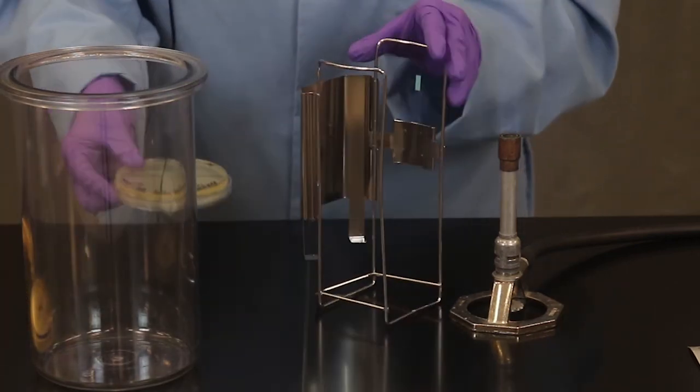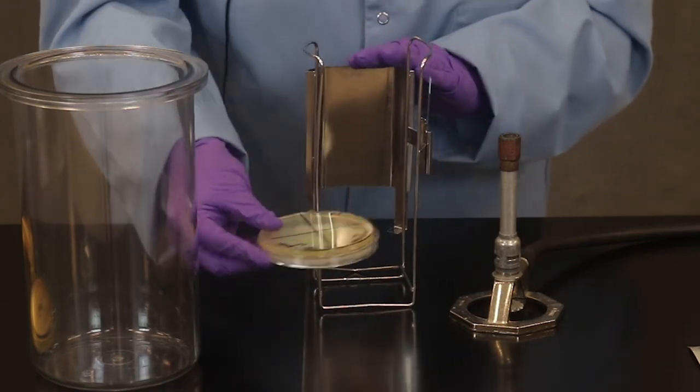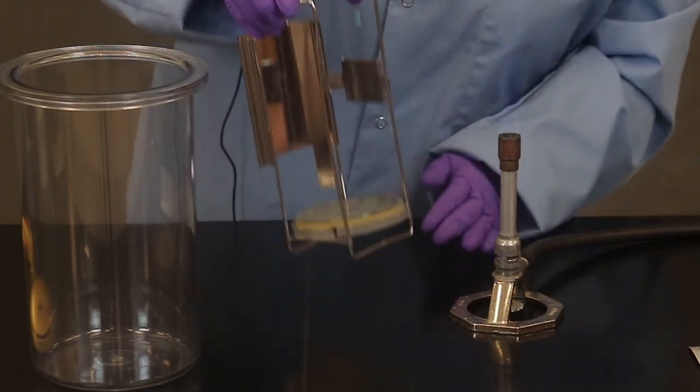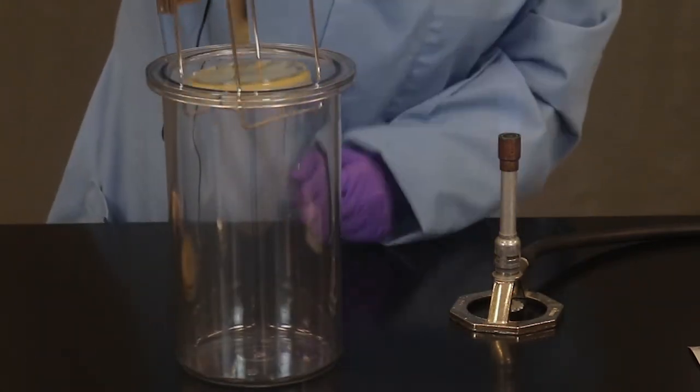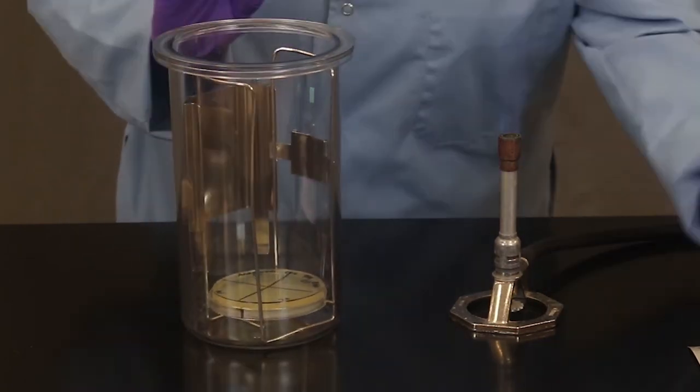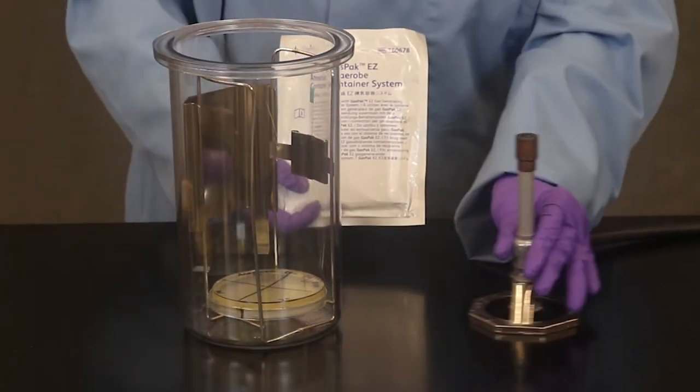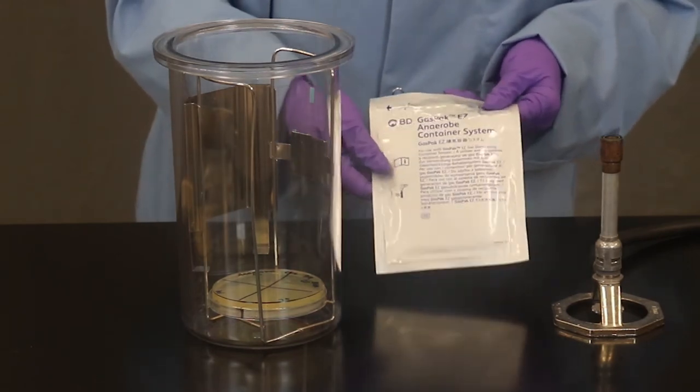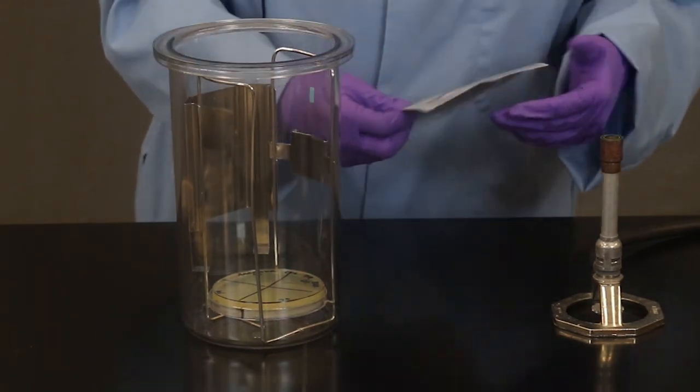So you're going to take your anaerobic plate. Our lid is on the bottom here. You're going to feed it into the metal rack. Place it into the jar. And before we can close this up we're going to add our gas pack here. And this is going to help chemically chew up the oxygen in the jar creating our anaerobic environment.